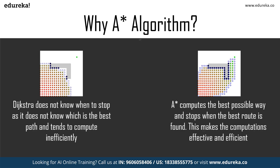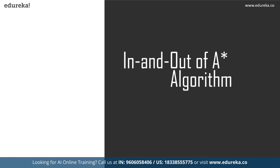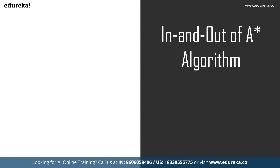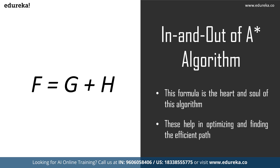Now that you know why we choose A*, let's understand a bit of theory about it, as it is essential to understanding how this algorithm works. A* is used to find the most optimal path from a source to a destination, and it optimizes the path by calculating the least distance from one node to the other. There is one formula that you need to remember, as it is the heart and soul of this algorithm: F = G + H. Remember this if you want to understand the algorithm properly.